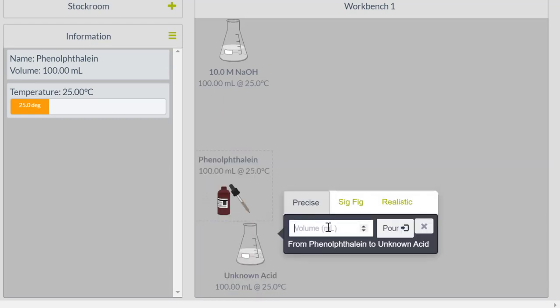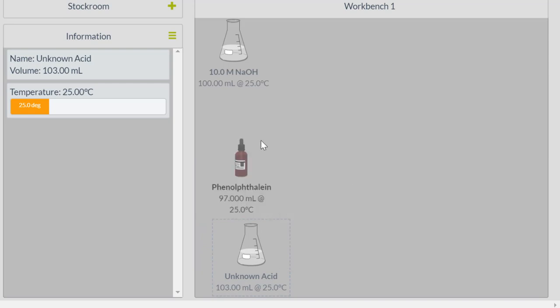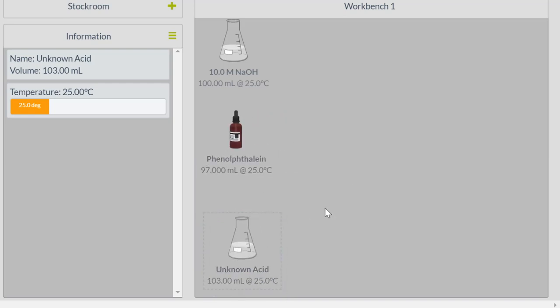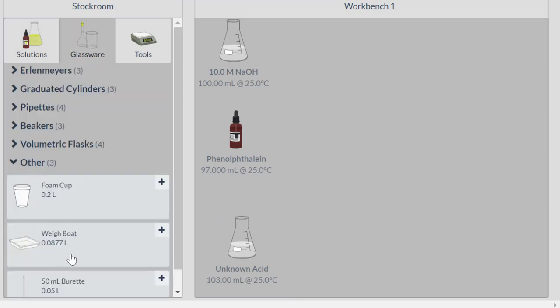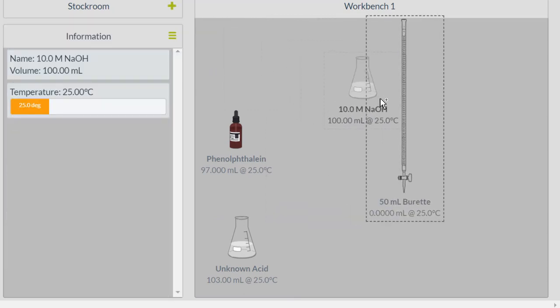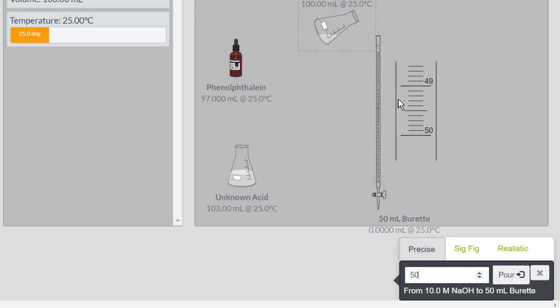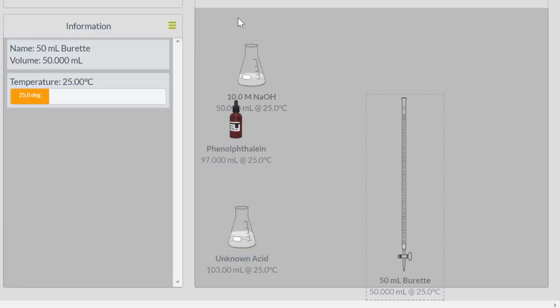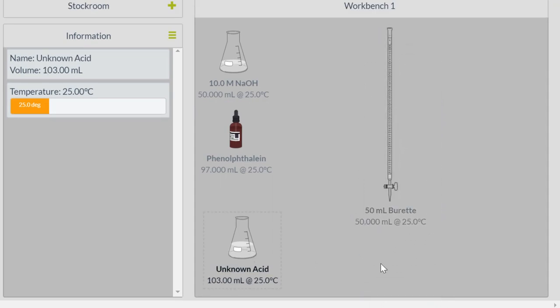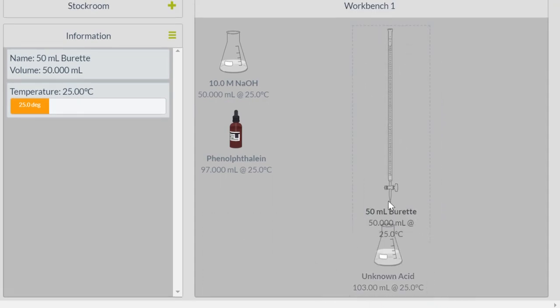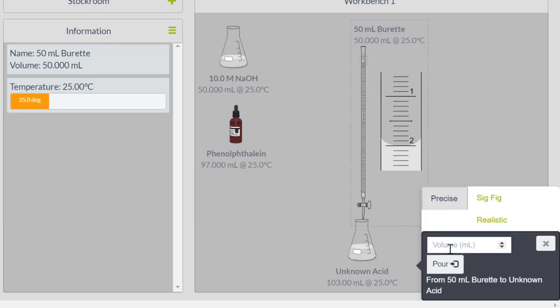Remember, the end point is when the color changes, which means we need an indicator. We need phenolphthalein in there. And so we need one more piece of glassware. That is a burette. We're going to fill this burette up to 50 milliliters with my 10.0 molar of my sodium hydroxide. You can see I have my burette right here. I have my unknown acid. And I'm going to start my titration.